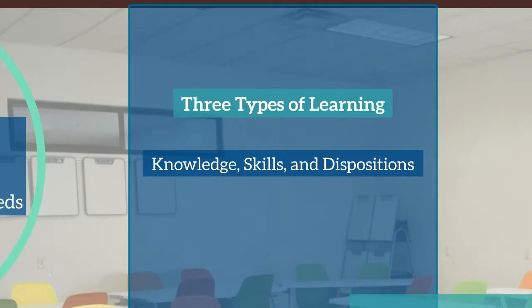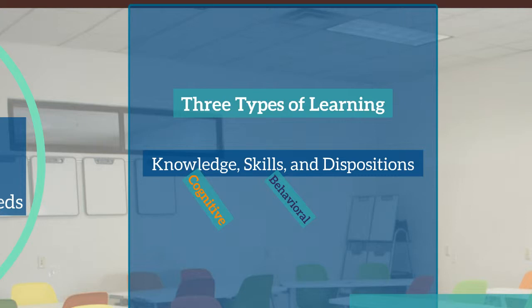There are three types of learning that teachers should consider when writing instructional outcomes. The first is knowledge and understanding, which can be assessed through selected response instruments. The second is skills-based learning, which can be assessed through performance-based assessments. The third is the most difficult to assess: dispositions.